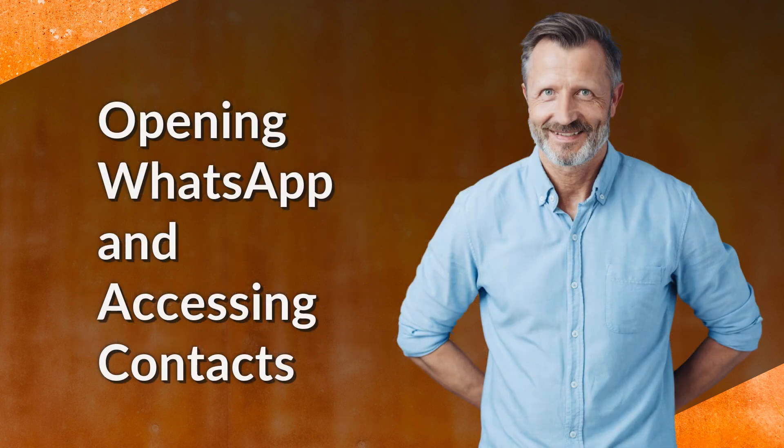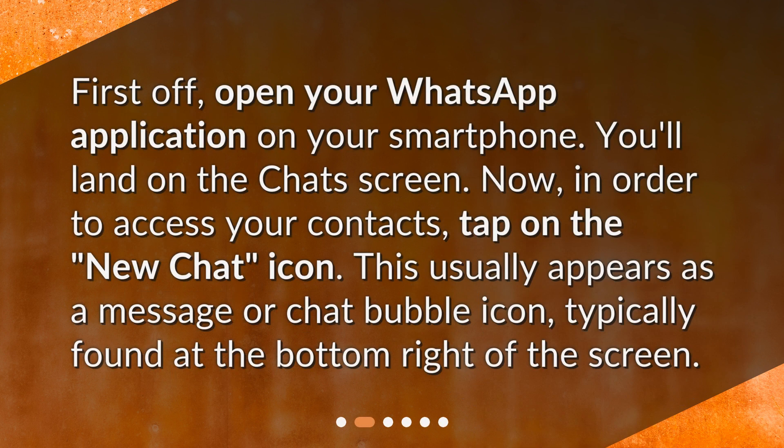Opening WhatsApp and accessing contacts. First off, open your WhatsApp application on your smartphone. You'll land on the chat screen. Now, in order to access your contacts, tap on the New Chat icon. This usually appears as a message or chat bubble icon, typically found at the bottom right of the screen.